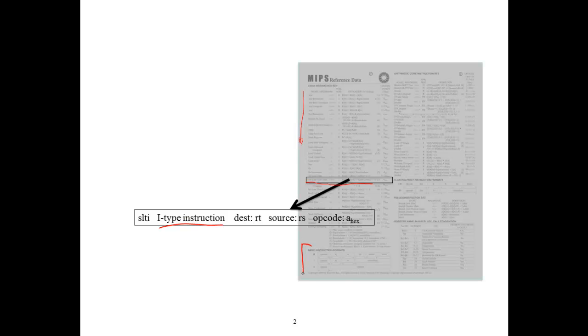Using the information at the bottom of the sheet, we can see that an I-type instruction is made up of four fields. There's the opcode field, which is a 6-bit field. There are two 5-bit register specifiers, RS and RT, and a 16-bit immediate field.